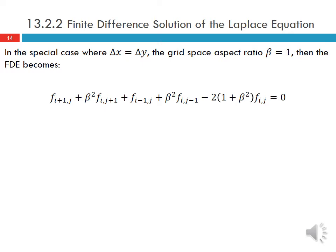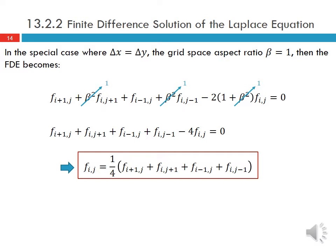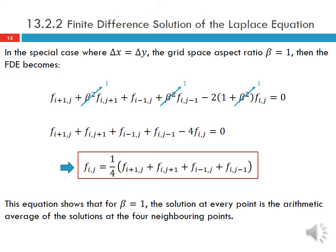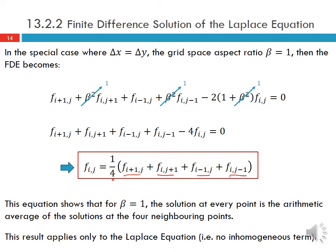In the special case where delta x equals delta y, the grid aspect ratio beta equals 1, and the finite difference approximation simplifies. Rearranging for f at (i,j), this equation shows that for beta equals 1, the solution at every point is the arithmetic average of the solutions at the four neighboring points — just 1/4 times the sum of all four neighbors. This result only applies to the Laplace equation where we have no inhomogeneous term (f_{xx} + f_{yy} = 0); it is not a general result for all elliptic PDEs.